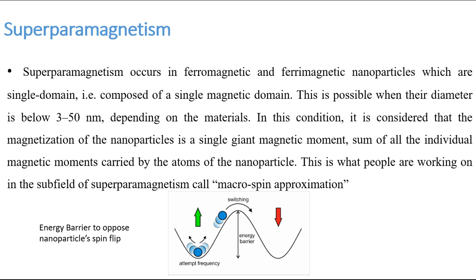Superparamagnetism occurs in ferromagnetic and ferrimagnetic nanoparticles that are composed of a single magnetic domain, which is possible when the diameter is below roughly 50 nanometers depending on the material. In this condition, the magnetism of the nanoparticle is treated as a single giant magnetic moment — the sum of all individual magnetic moments in the core. This is the basis of the subfield called the macro-spin approximation.